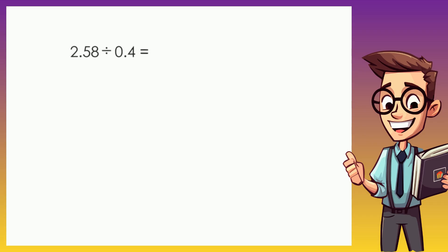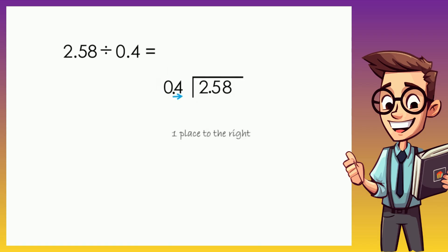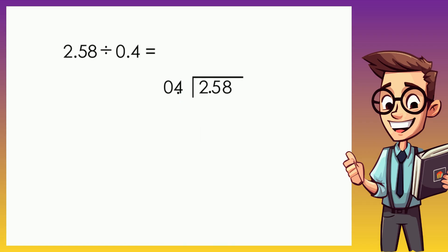Here we need to divide 2.58 by 0.4. In long division it will look like this. Since our divisor is not a whole number, we need to move the decimal point one place to the right. Now it's already a whole number — it's 4. As a consequence, we also need to move the decimal point of the dividend once to the right.